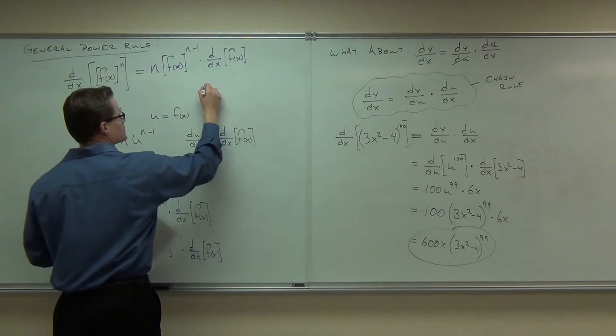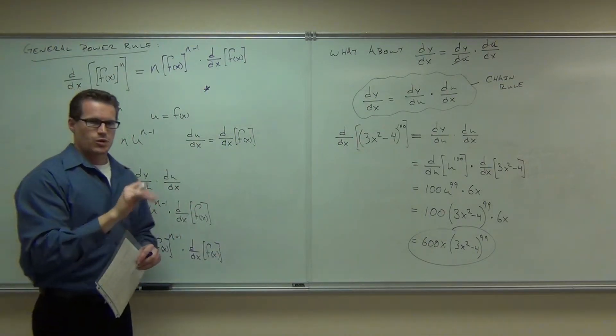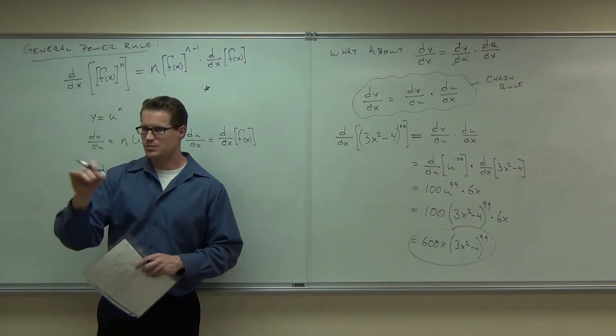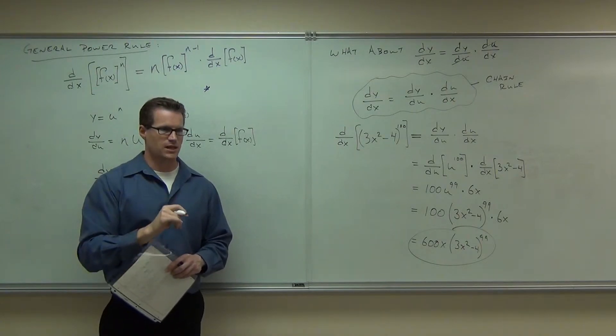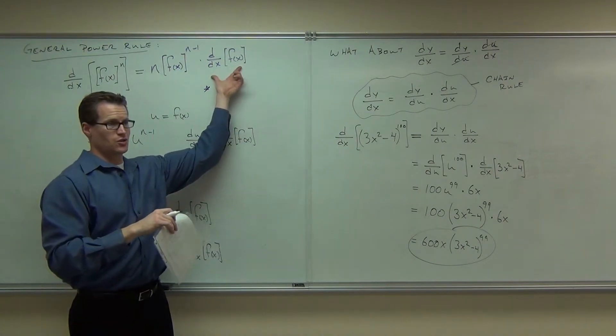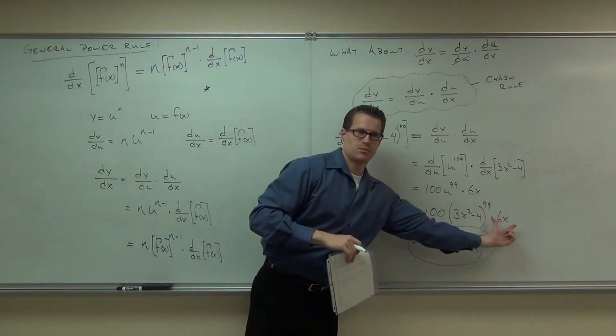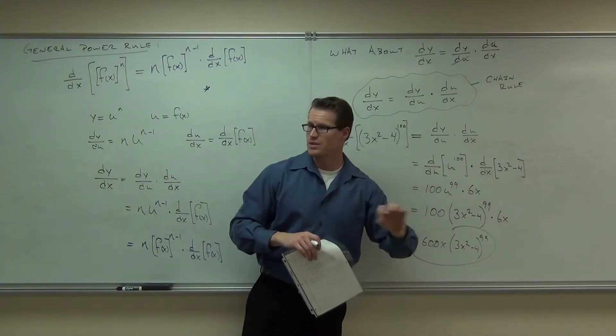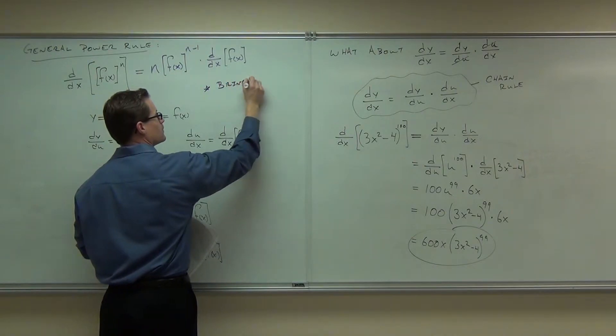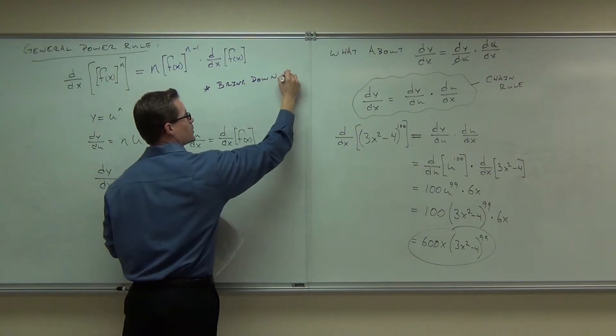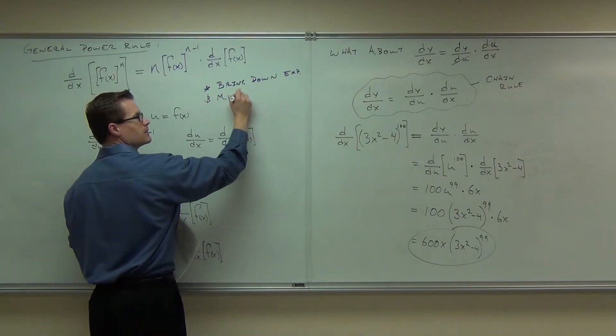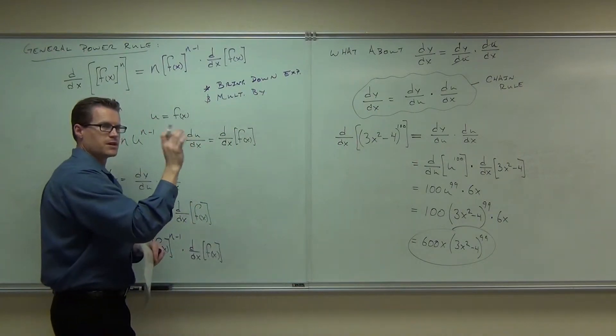So in English, if you want to hear this in English, bring down the exponent as usual as you normally do for the power rule. That's why it's called the general power rule. So bring down the exponent like it's a power rule. Just multiply by the derivative of the inside. You just can't forget about the derivative of the inside because this thing matters for sure. If you don't have the 6x here, does it affect your problem? Oh, heck yeah. Okay, so that does matter. Bring down the exponent and multiply by the derivative of the inside.